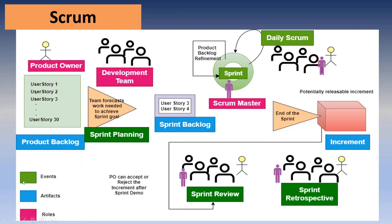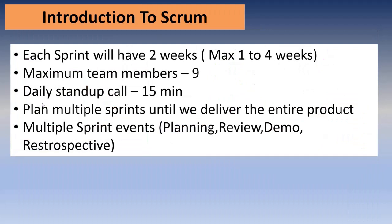This diagram shows the communication between each event, artifact, and role in the Scrum team. I will explain this diagram later once we have discussed all these things separately, one by one. Before we discuss all these events, artifacts, and roles, you need to understand what a user story is. So our next topic will be user story, and we will be discussing many things about user stories in our next video.